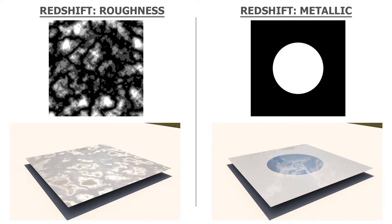You should be able to tell, looking at a roughness map, which parts are going to be shiny and which parts are going to be rough. Same for metallic — if you're looking at a metallic texture, you should be able to tell which parts are going to be metallic and which parts are non-metallic. In this video I'm going to explain what each of those mean when it comes to using roughness textures and metallic textures with Redshift for Maya.